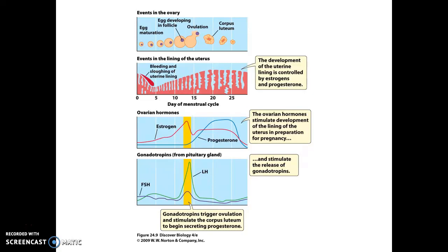The main take-home message about these reproductive cycles is that there are two cycles in one, and they are synchronized by hormones that are coming both from the ovaries themselves and from the pituitary gland.